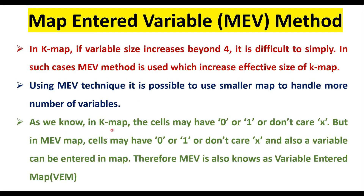As we know in KMAP, the cells may have 0, 1, or don't care. But in an MEV map, the cells contain 0, 1, or don't care, along with a variable that can be entered into the map. Therefore, MEV is also known as variable entered map or VEM.